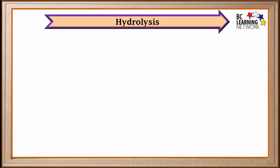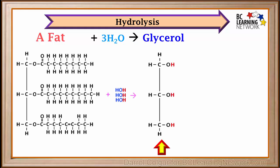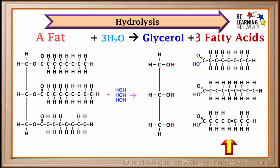Now we'll summarize the process of hydrolysis. We start with a fat molecule. And in the presence of the appropriate enzyme, we add three water molecules. And the fat breaks down into a glycerol molecule and three fatty acid molecules.